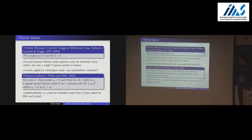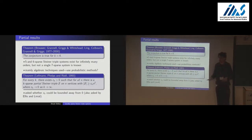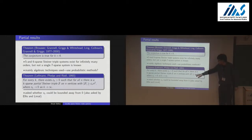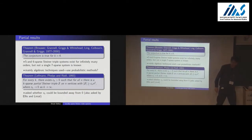What can you say with probabilistic methods? An early result says you can get K-sparse systems — good, they don't have the forbidden configurations — but they're only partial systems, not full Steiner triple systems. They don't cover all the pairs. The number of triples they contain is some constant C_K times N squared, where C_K tends to 0 as K grows, whereas you'd really like roughly N squared over 6 triples.